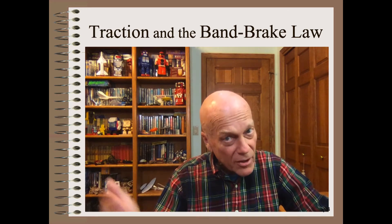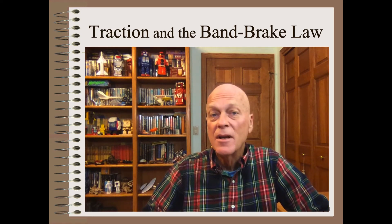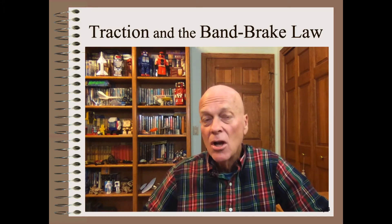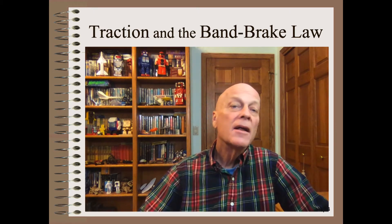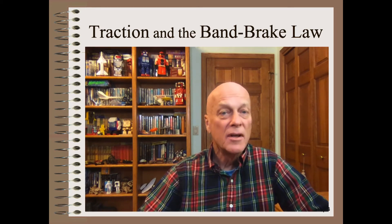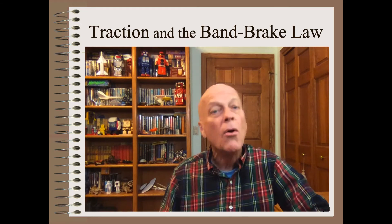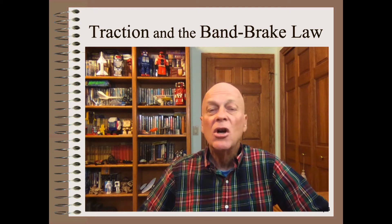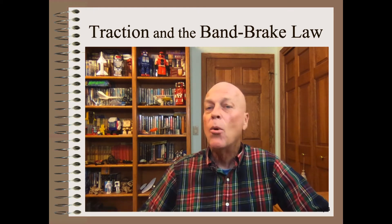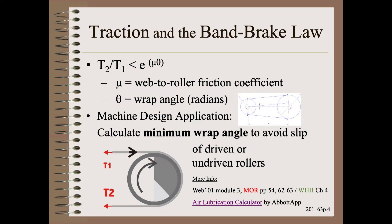Most rollers, whether driven or undriven, are intended to be in traction. Otherwise, we risk loss of tension control, loss of path control, and scratching of the web. The band brake law is used to design rollers to ensure that traction is never lost, whether on driven or undriven rollers. To make sure traction is never lost requires a sufficient combination of wrap and web-to-roller friction. This design requirement is well documented in Module 3 of my award-winning Web 101 class, as well as in several pages in both my Mechanics of Rollers book and in the must-have 750-page Web Handling Handbook. We even have a free and easy internet app, the Air Lubrication Calculator by Avid App, to do these calculations for you.